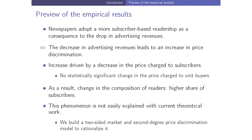As a preview of the empirical results: newspapers adopt a more subscriber-based readership as a consequence of the drop in advertising revenues. The decrease in advertising revenues leads to an increase in price discrimination, driven entirely by a decrease in the subscription price with no change in the unit newsstand price. We find a change in reader composition toward a higher share of subscribers. Since this is not easily explained by current theoretical work, we developed a model of price discrimination in a two-sided market.